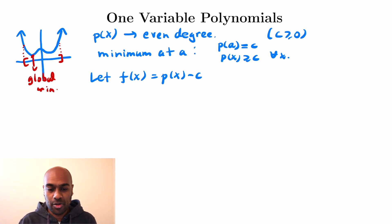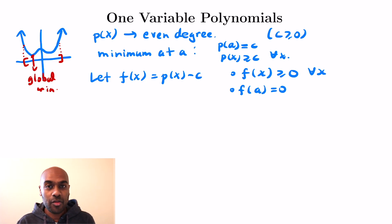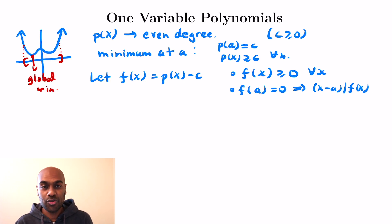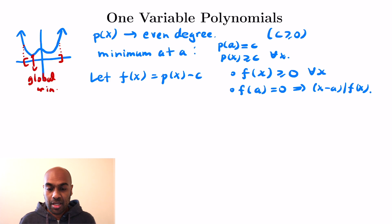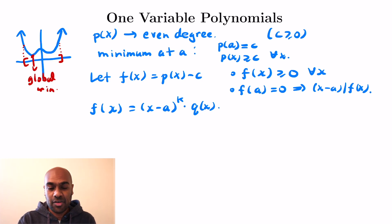We consider a shift: f of x equals p of x minus c. Since p of x is at least c for every x, f of x itself is a non-negative polynomial, and it's zero at a because p of a equals c. Now f is a polynomial that's zero at the value a, so x minus a has to be a factor of f of x — that's the remainder theorem. So we can write f of x as x minus a to some power multiplied by another polynomial q of x. But since f itself is non-negative, that exponent has to be even on x minus a; otherwise we could pick a value very close to but just less than a, which would force a dip into negative values.